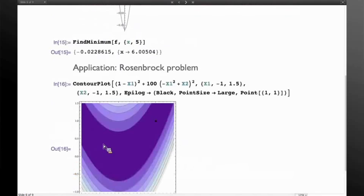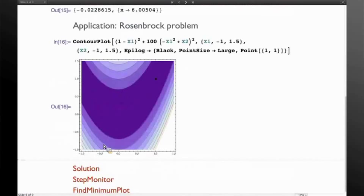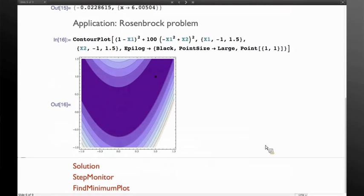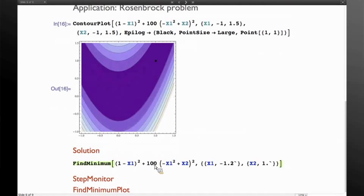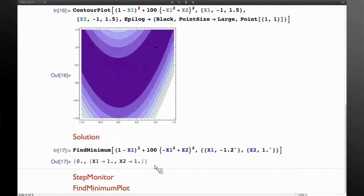As a good example problem, we have the Rosenbrock problem, which is a good problem for optimization because it has a long, thin valley, and it's easy for optimization algorithms to get lost in there. So it's a good test algorithm. So let's run FindMinimum on that, and it gives us the solution at 1, 1, which is correct.